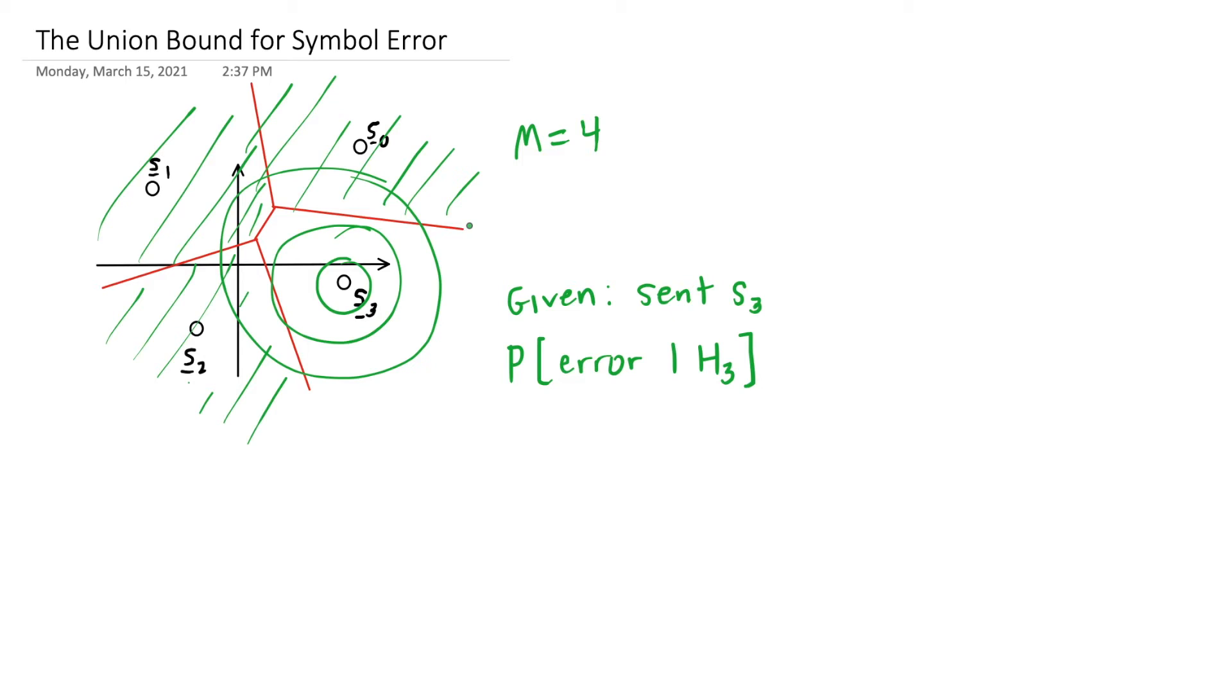We could do that and come up with a number, but we can also come up with the union bound for this expression. It turns out it will be very close to the actual probability of error. Let's go back and talk about error event e2 given 3.